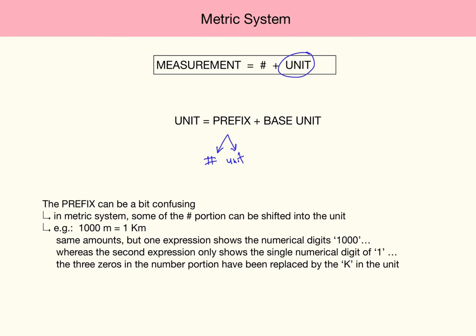For example, look at this expression below. 1,000 meters equals 1 kilometer. Notice these are identical quantities, but one of these only has one numerical digit and the other one has a new letter that showed up. And it is this letter right here that has buried in it a number component. So let's look at those.